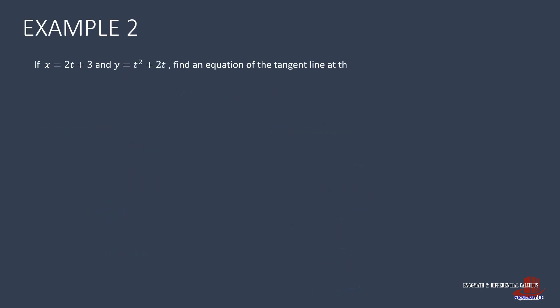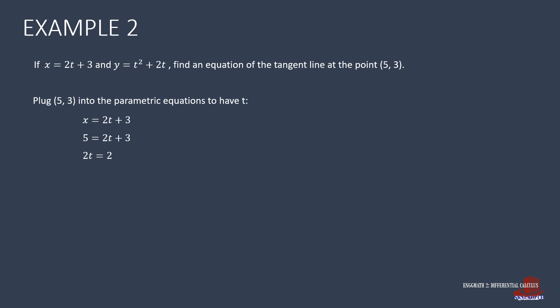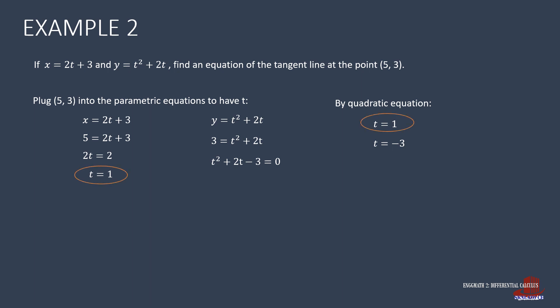Example 2 has parametric equations x = 2t + 3 and y = t² + 2t, with the point (5, 3) given. Since the coordinates are already provided, we work directly on finding t. From the x equation: 5 = 2t + 3, so 2t = 2 and t = 1. For y: substituting 3 gives 3 = t² + 2t, rearranged as t² + 2t − 3 = 0. Using the quadratic formula, t = 1 or t = −3. We take the value common to both equations, which is t = 1.